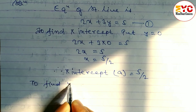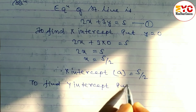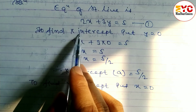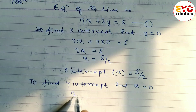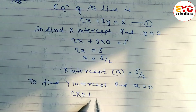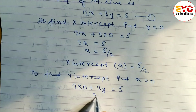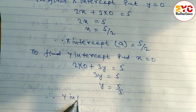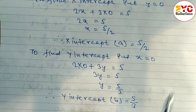Similarly, to find the y-intercept, put x = 0. In the place of x we write 0, so we get 2(0) + 3y = 5, which gives 3y = 5, so y = 5/3. Therefore, y-intercept b = 5/3.